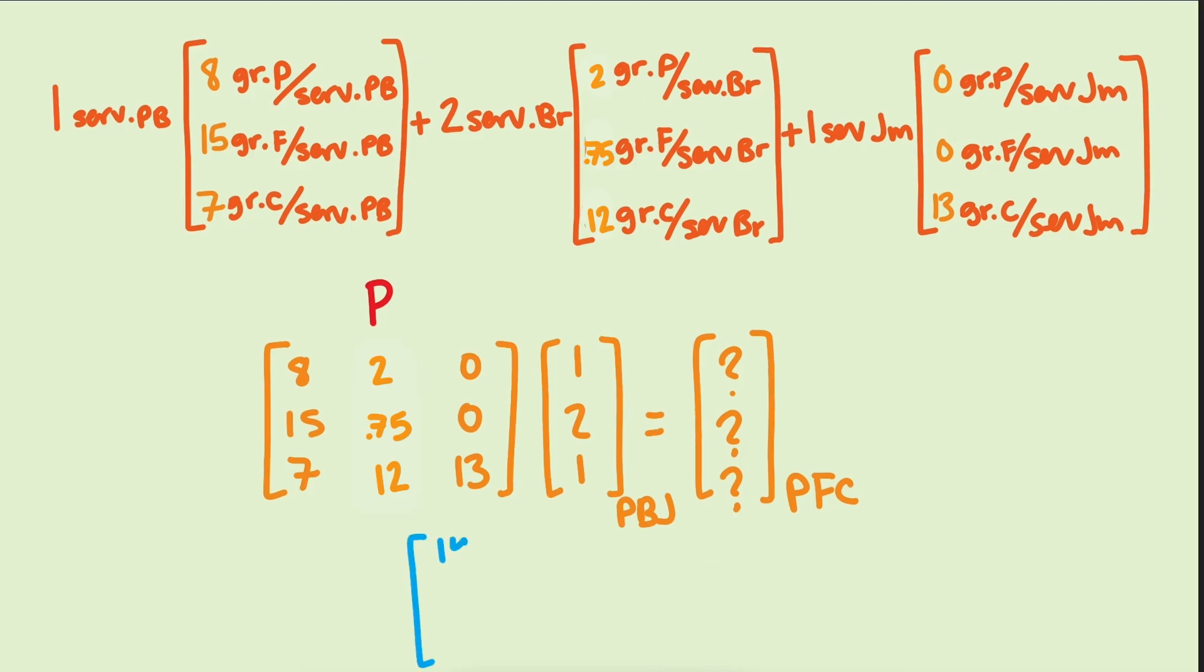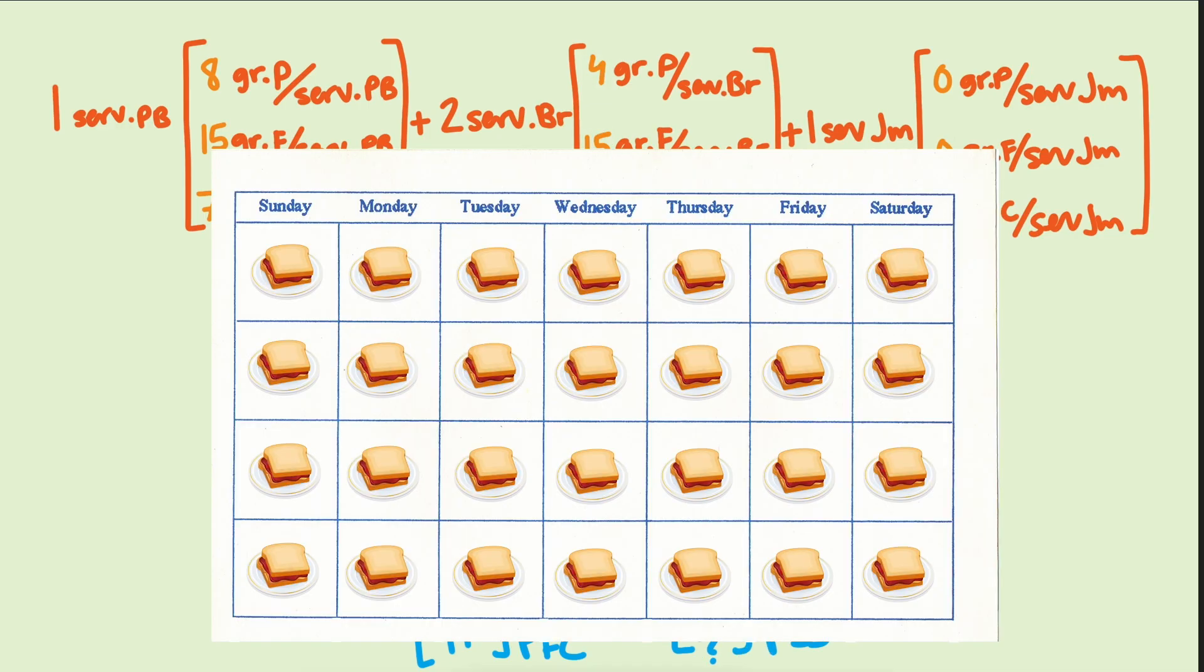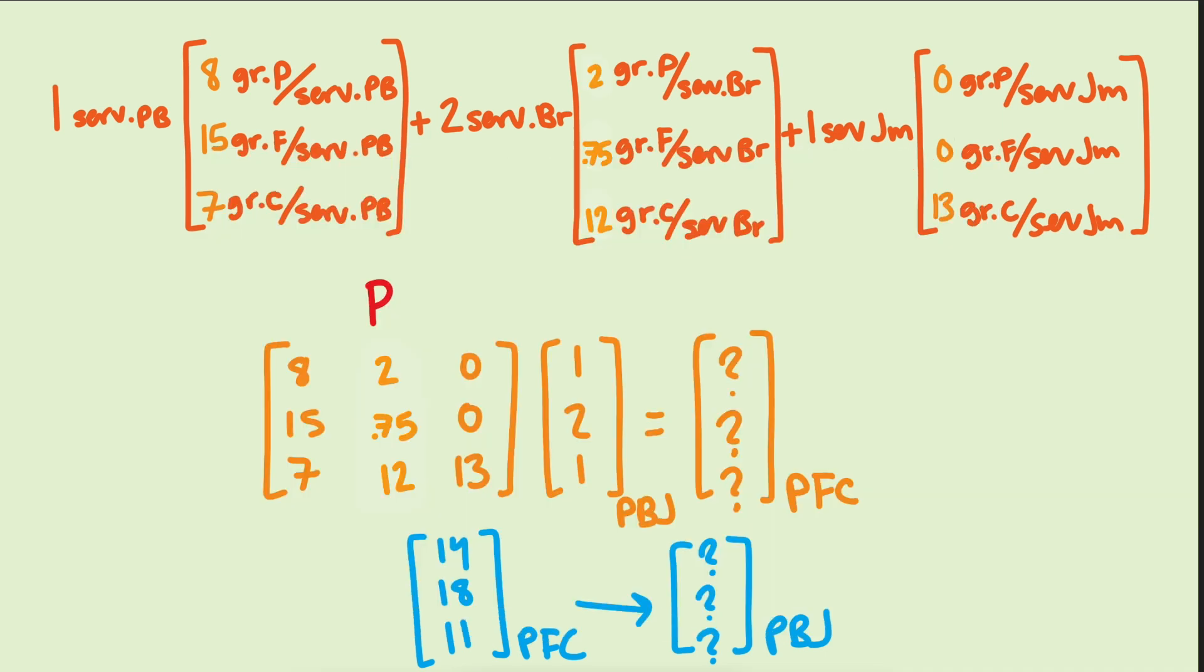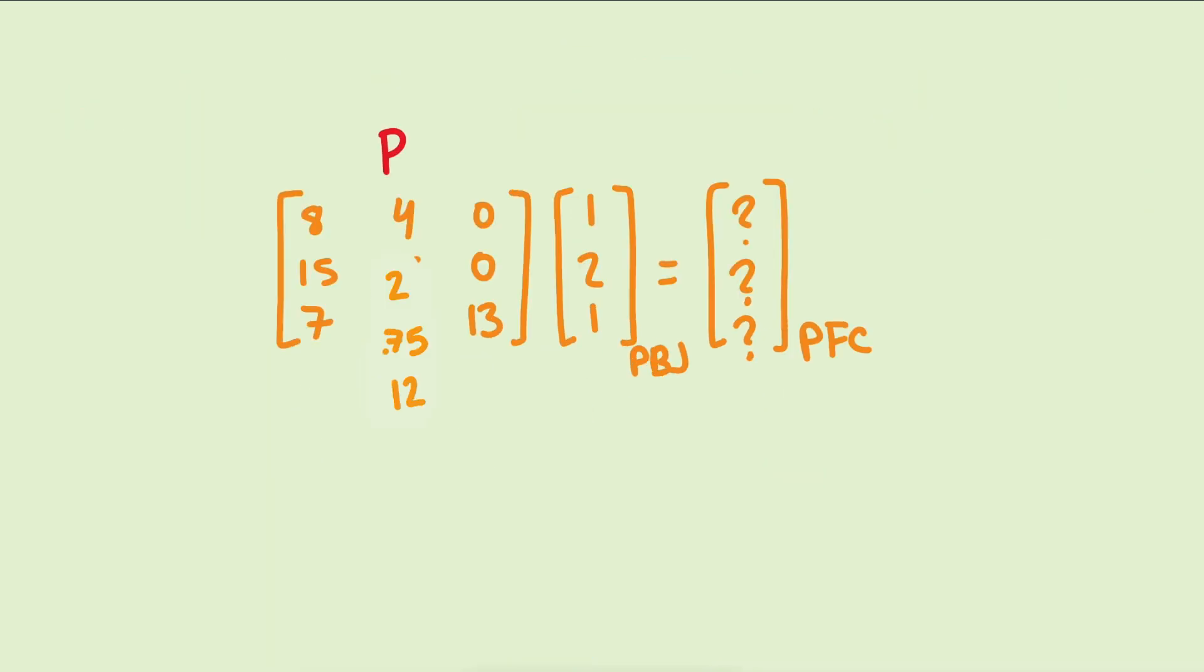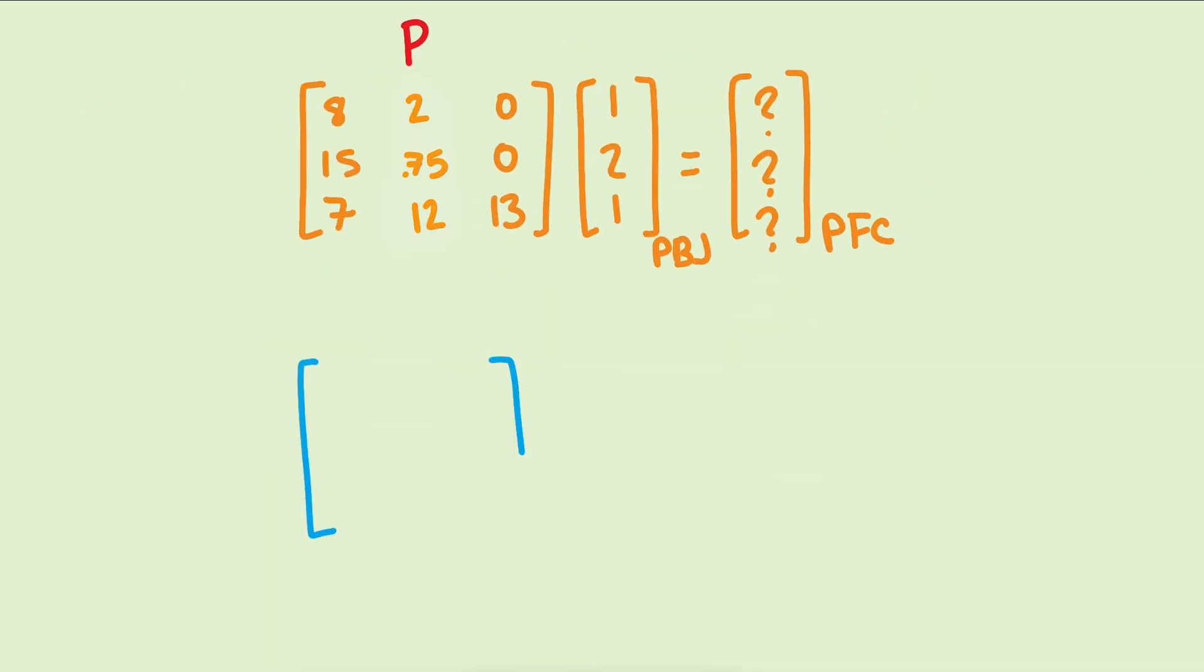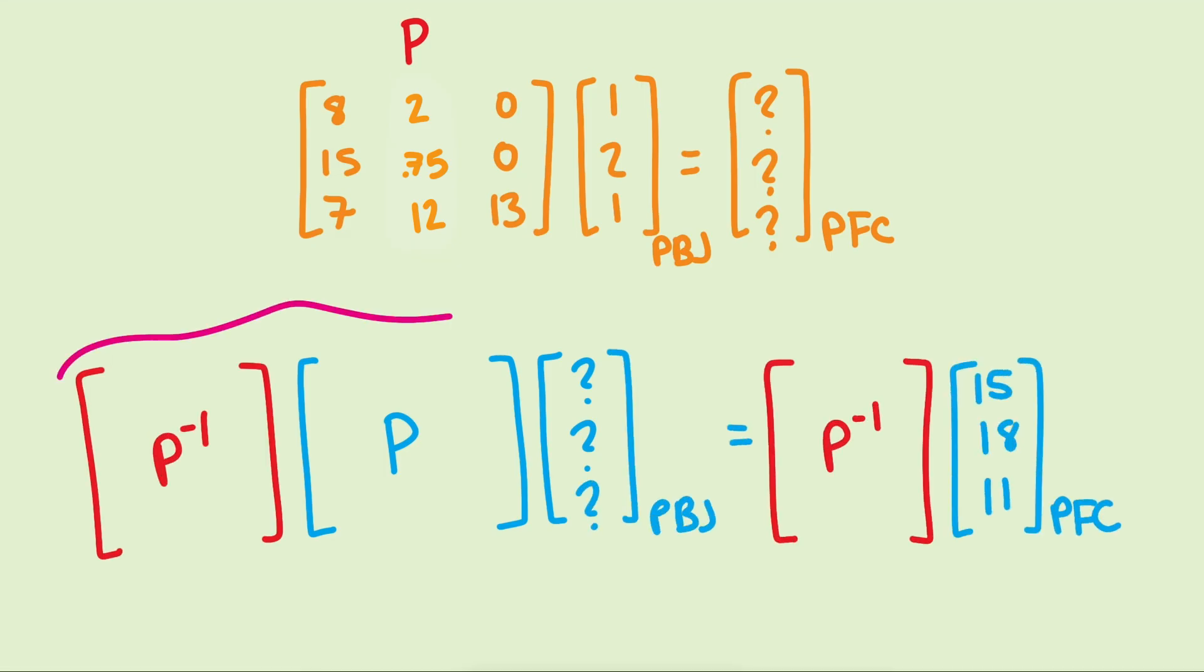Okay, so what if we want to go from PFC to PBJ? That's backwards. If all I can eat for lunch is PB and J, and I have a goal for my grams of protein, fat, and carbs, then I need a way to convert my PFC goal vector into my PBJ sandwich ingredient vector. Well, this we can do with very little thinking if we understand inverse matrices. Two steps of matrix algebra shows that the matrix we can multiply a PFC vector by to get a PBJ vector is the inverse matrix of P.